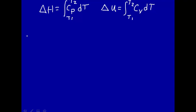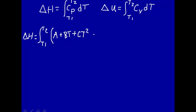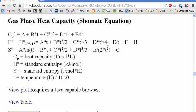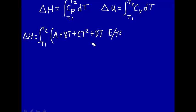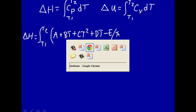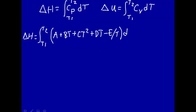So let's remember that and go back. We're going to calculate delta H. Delta H will be the integral from one temperature to another temperature of the heat capacity at constant pressure from the Shomate equation — that's A plus B·T plus C·T² plus D·T³ plus E over T squared — times dT.